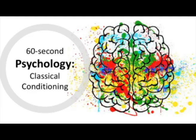Advertisers use classical conditioning to influence consumers to buy their products. For example, they use certain colors and sounds to cause an unconditioned response that they want consumers to associate with their brand, such as happiness or nostalgia. Consumers therefore buy the brand to get the same emotional response.